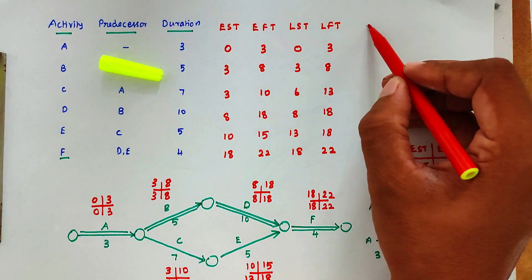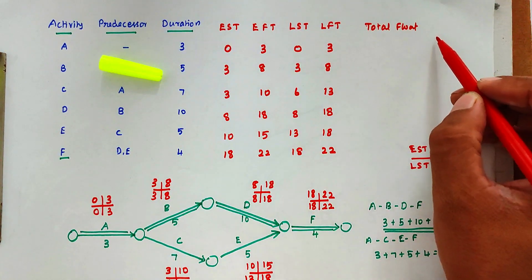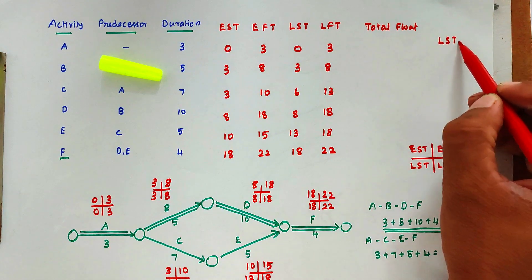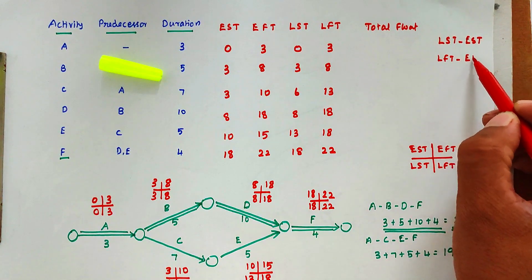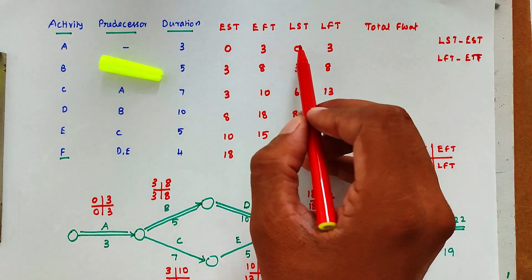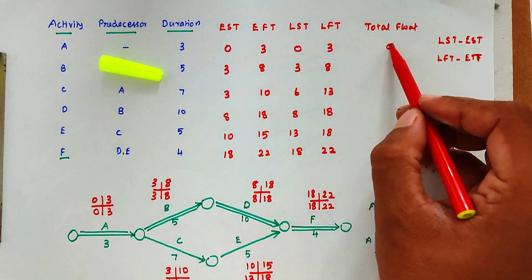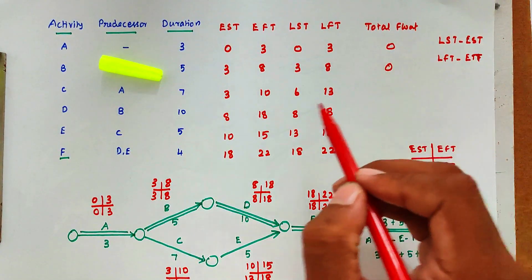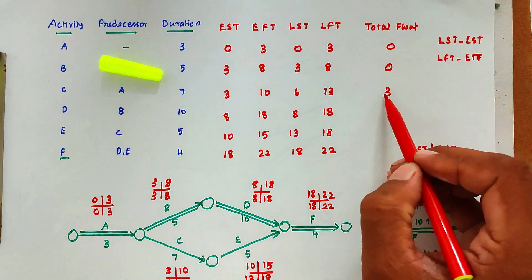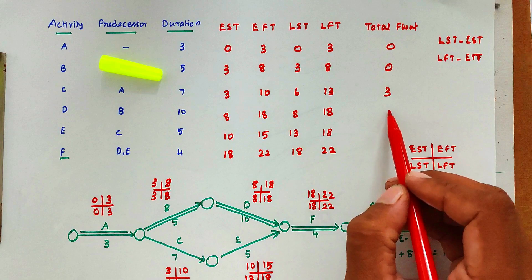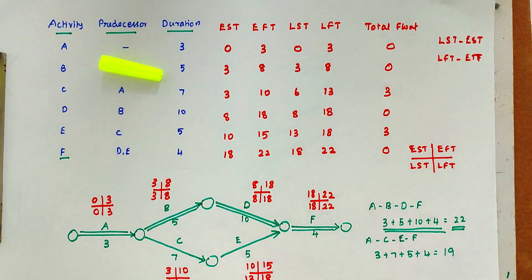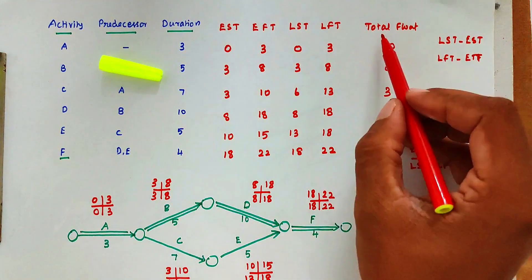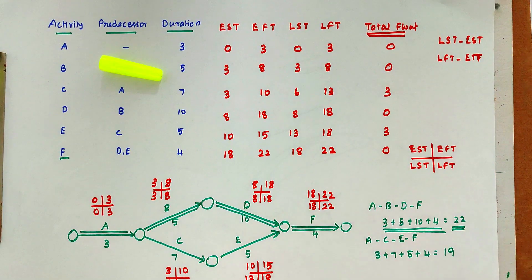Now we find the total float. The formula is: Total Float = LST − EST, or equivalently LFT − EFT. Calculating: A = 0−0 = 0; B = 3−3 = 0; C = 6−3 = 3; D = 8−8 = 0; E = 13−10 = 3; F = 18−18 = 0. These are the total floats for all activities. This is the method to solve the problem. We will see more in the next video. Thank you.